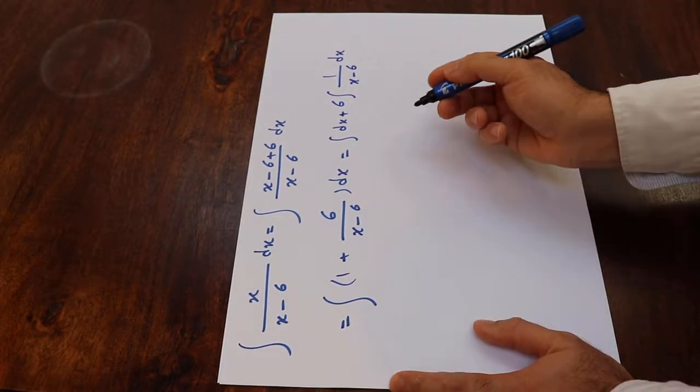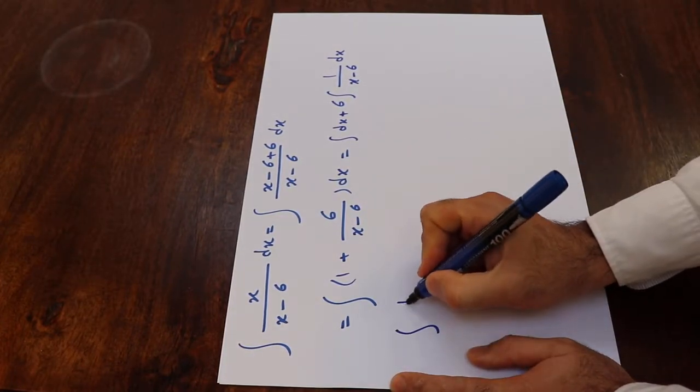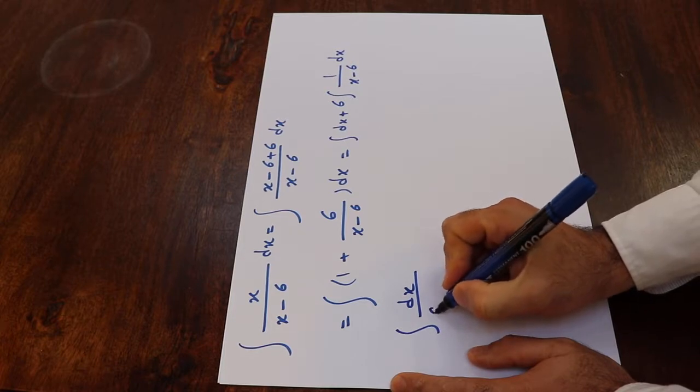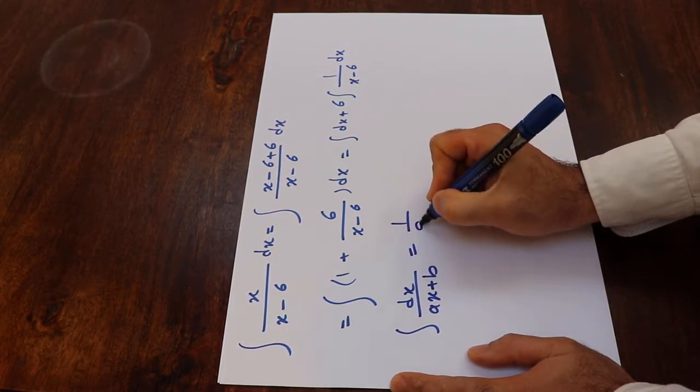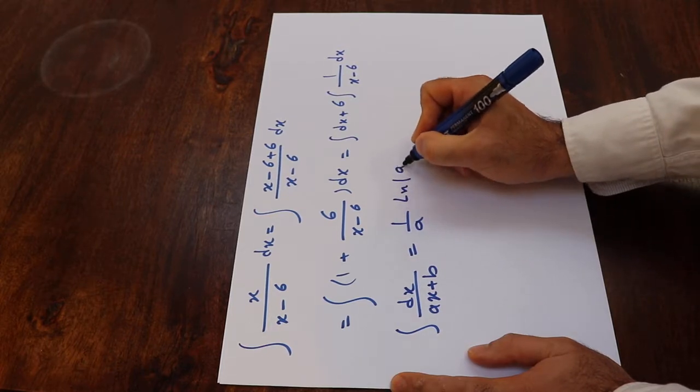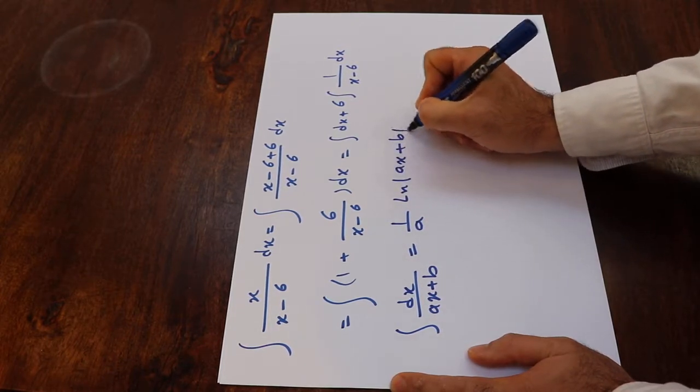From the table of integrals, we know that the integral of dx divided by ax plus b is equal to 1 divided by a times ln of ax plus b.